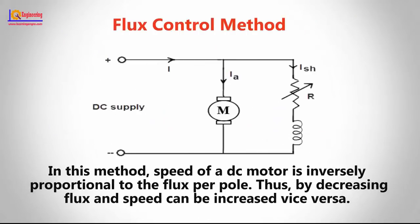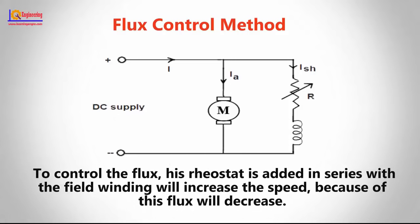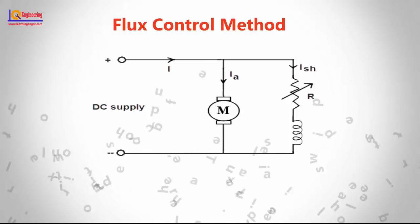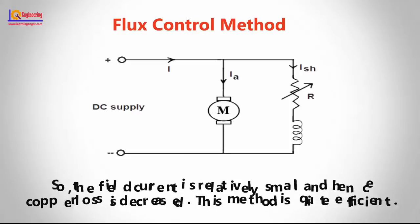In the flux control method, the speed of a DC motor is inversely proportional to the flux per pole. Thus, by decreasing flux, speed can be increased and vice versa. To control the flux, a rheostat is added in series with the field winding to increase the speed, because this causes flux to decrease. The field current is relatively small and hence copper loss is also decreased, making this method quite efficient.